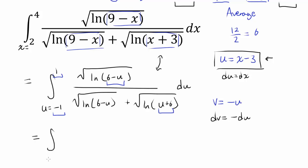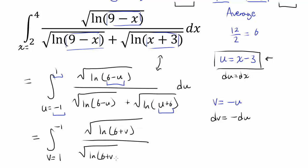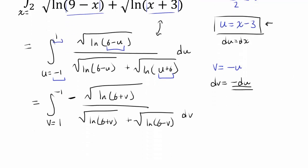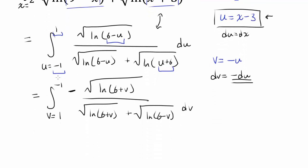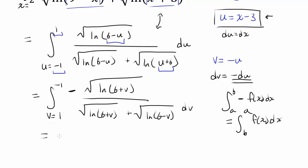Making v equals negative u gives dv equals negative du, and the value of v goes from 1 to negative 1. We get the integral with square root of natural log of (6 plus v) over square root of natural log of (6 plus v) plus square root of natural log of (6 minus v), times dv. Since dv equals negative du, we multiply by negative 1 and switch the limits of integration.